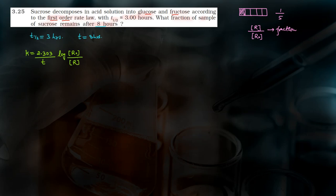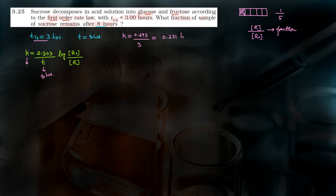यहाँ पर [R]₀/[R] वाली value calculate करनी है। t दिया है: 8 hours. k की value निकालनी पड़ेगी — given है t half, तो k equals to 0.693 divided by t half, जो है 3. तो k equals to 0.231 h⁻¹.